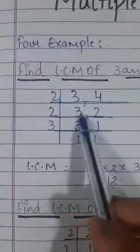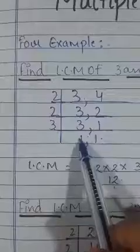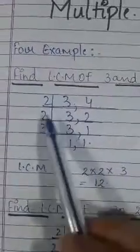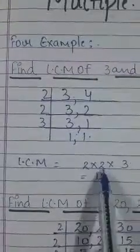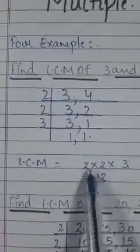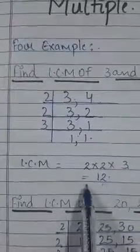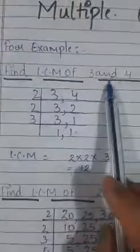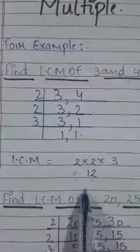Again with 2: 3 stays as it is, 2 ones are 2. Then with 3: 3 ones are 3 and 3. So the LCM will be 2 multiplied by 2 multiplied by 3. That gives us: 2 twos are 4, then 4 threes are 12. So the answer is 12. The LCM, or Least Common Multiple, of 3 and 4 is 12.